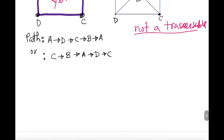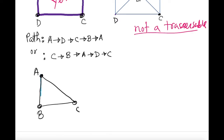Here's another example. Is this a traversable network? Clearly yes — I can go from this point to that point and come back: A to B to C to A. That's a valid path.